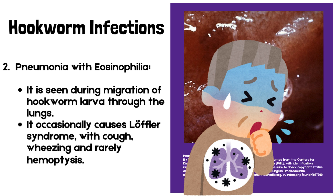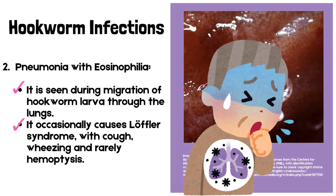Number 2: Pneumonia with eosinophilia. It is seen during migration of hookworm larvae through the lungs. It occasionally causes Loeffler syndrome, with cough, wheezing, and rarely hemoptysis.